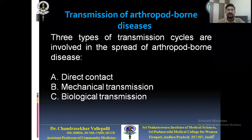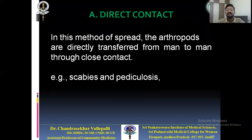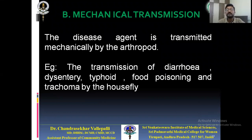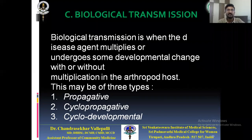Transmission of arthropod-borne disease may be of three types: direct contact, mechanical transmission, or biological transmission. In direct contact, arthropods are directly transferred from man to man through close contact — for example, scabies or pediculosis. In mechanical transmission, the arthropod transmits disease between hosts — for example, house flies spreading dysentery, typhoid, and food poisoning.